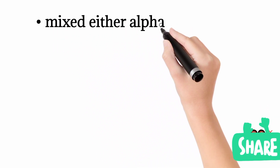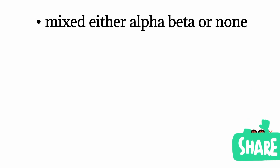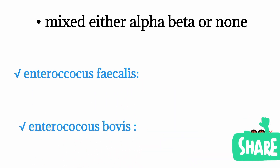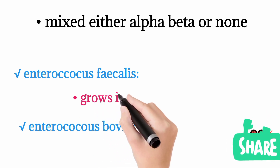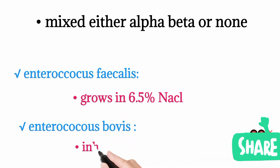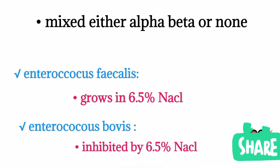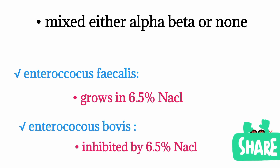Finally, the mixed category of Streptococcus species includes organisms that may show alpha-hemolysis, beta-hemolysis, or no hemolysis at all. This includes Enterococcus fecalis and Enterococcus bovis. To differentiate between the two, we use their ability to grow in 6.5% sodium chloride medium. Enterococcus fecalis will keep growing in a 6.5% sodium chloride medium, whereas Enterococcus bovis will not grow in such a concentrated medium.